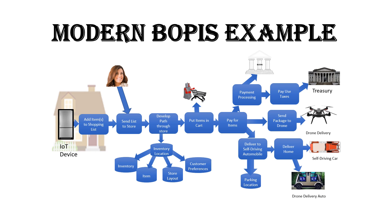When you're ready, you have the shopping list sent to the store. The store receives it and has to develop a path for the robot to go pick up these eggs. That path is dependent on what item is in inventory, what the store layout is, what the customer preferences are, and which kind of eggs they like to buy. Once that path is built, it's sent to the robot and it drives around picking those items and puts them in the cart.